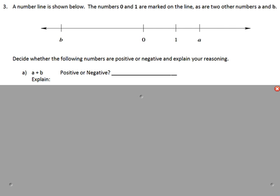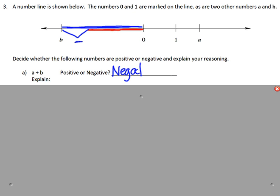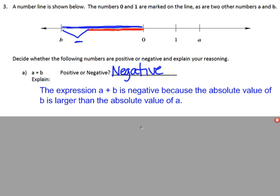Next, I have a number line with 0 and 1, and two variables A and B. We need to decide whether the different operations will be positive or negative. For part A, if I add A plus B — A is positive and B is negative. The absolute value of B is greater than the absolute value of A, so there's more negative than positive. When I add them together, I get a negative result. A plus B is negative because the absolute value of B is larger than the absolute value of A.